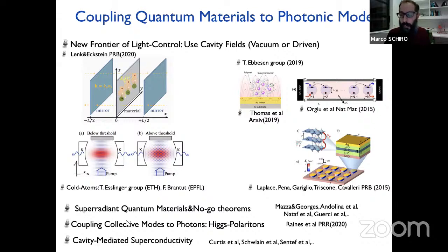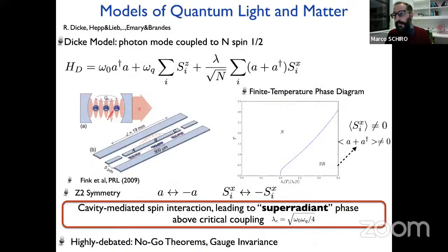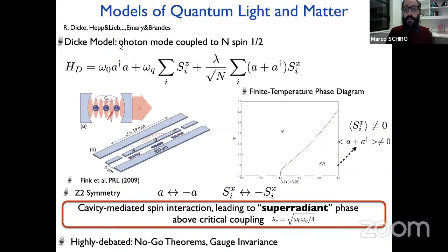From the theory point of view, several proposals exist, including describing super-radiance in quantum materials, coupling to collective modes of superconductors to create cavity exciton-polaritons, or using cavity photons to mediate pairing between electrons. To understand super-radiance, let me step back and take inspiration from quantum optics, where the coupling of quantum light and matter has been studied extensively. The textbook model is the Dicke model: coupling a photon mode from a resonator or superconducting circuit to a bunch of two-level systems via a collective coupling between polarization sigma_x and the electric field (a + a†).